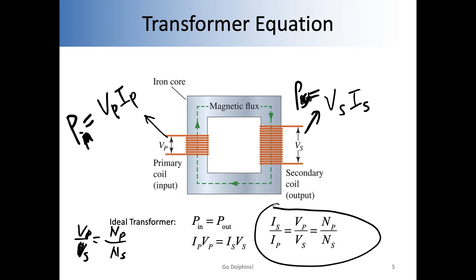So in total, we have this transformer relation: how current and potential in the primary coil and the secondary coil relate to N_P and N_S.